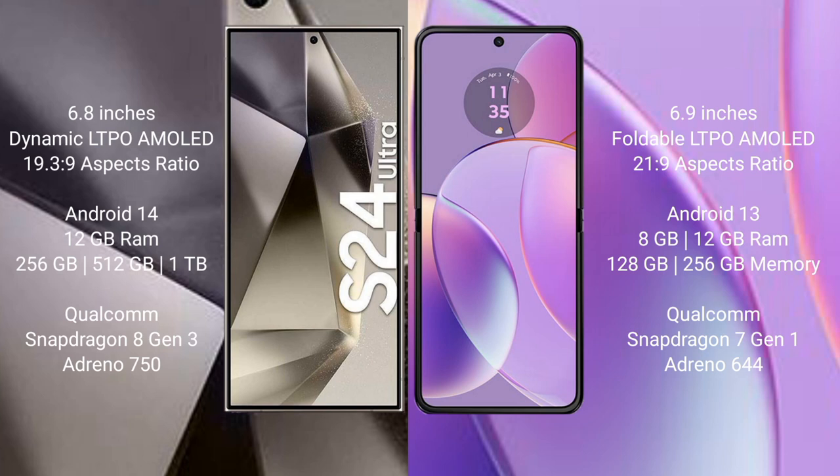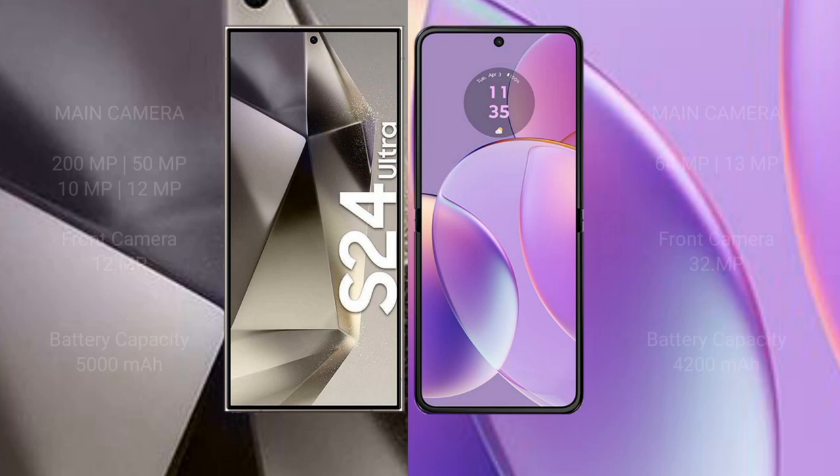Samsung Galaxy S24 Ultra comes with 8GB or 12GB RAM and 256GB, 512GB, 1TB internal storage, Qualcomm Snapdragon 8 Gen 3 processor, and GPU Adreno 750. Motorola Razr 40 comes with 8GB or 12GB RAM and 128GB or 256GB internal storage, Qualcomm Snapdragon 7 Gen 1 processor, and GPU Adreno 644.